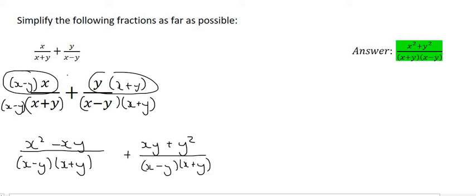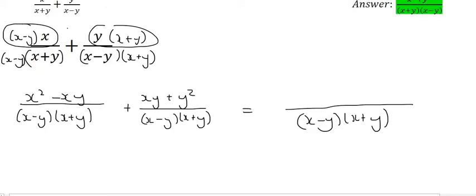Remember, you don't multiply out your common denominators. Now, because the common denominators are the same, we can simply put everything together like this. And then the top part, you can just write next to each other. So it'll be x² - xy + xy + y².